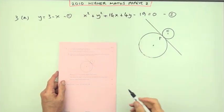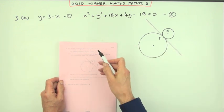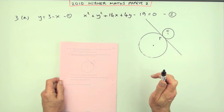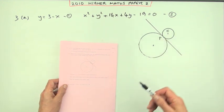So number 3 then from the 2010 Higher Maths Paper 2, Circles Question. First part, show a line is a tangent to a circle and find where it contacts. And secondly, find the equation of some related circle.